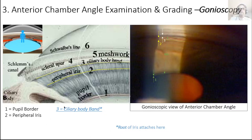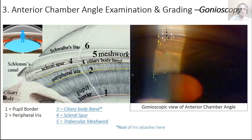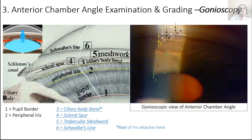The ciliary body band is dark because it is the pigmented part of the ciliary body. Right in front of it is a white line — the scleral spur — which is a projection of the sclera into the anterior chamber angle, appearing white because sclera is white. That is structure 4. Structure 5 is the actual trabecular meshwork, which allows aqueous to flow out of the eye and produces a little resistance to generate pressure.